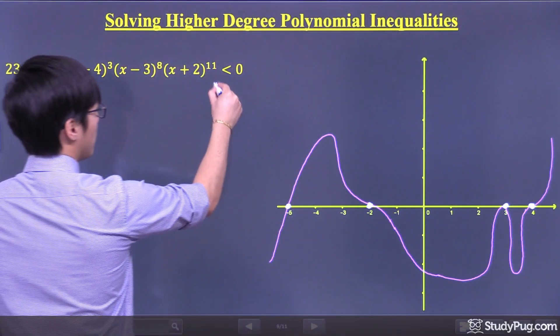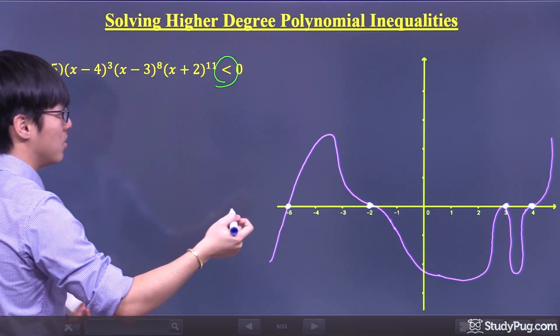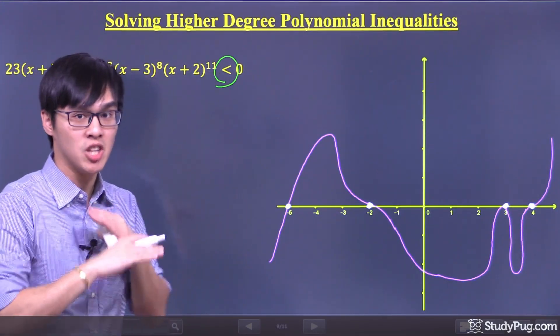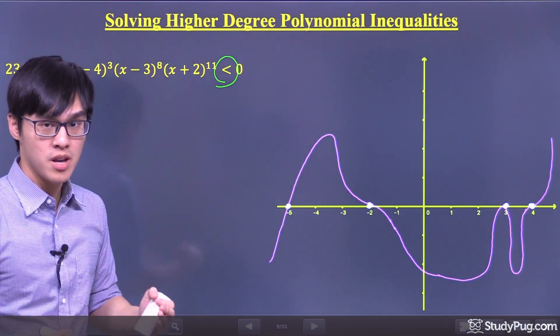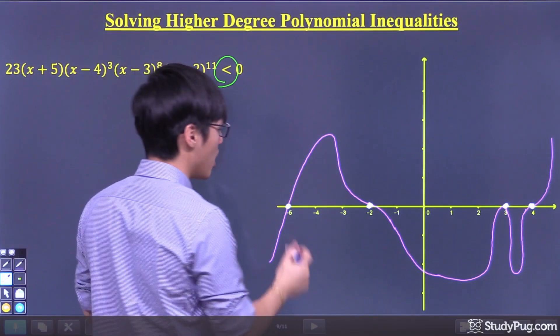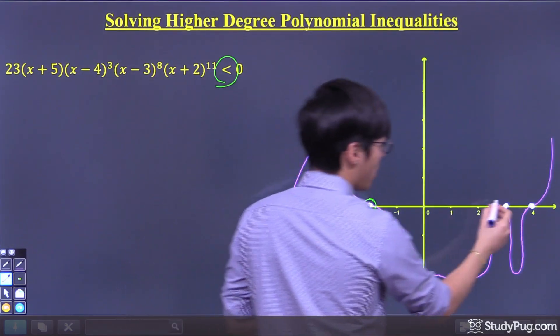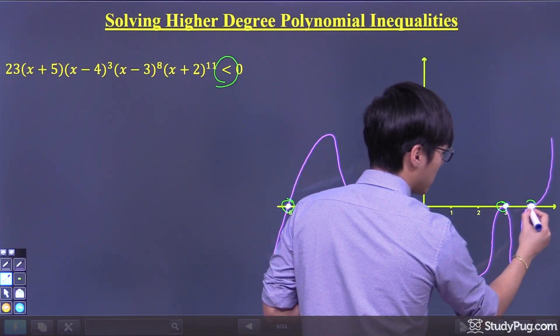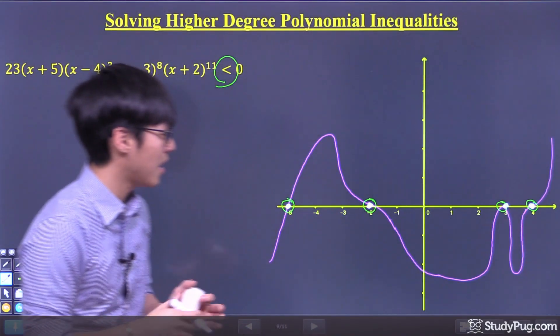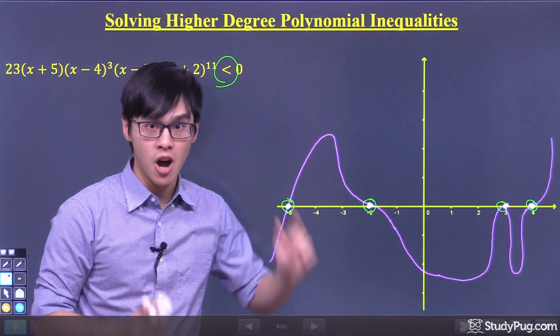We're looking at less than zero. That means it cannot equal to zero. If it cannot equal to zero, what should we do? We should put in something called an open circle. We put an open circle on the endpoints to tell ourselves that these endpoints are not included.